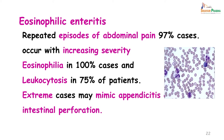Eosinophilic enteritis presents as repeated episodes of abdominal pain in 97 percent of cases, with gradually increasing severity. Eosinophilia is seen in practically all patients, and leukocytosis in about three-fourths of patients. In extreme cases, eosinophilic enteritis may present with signs and symptoms of appendicitis or intestinal perforation.